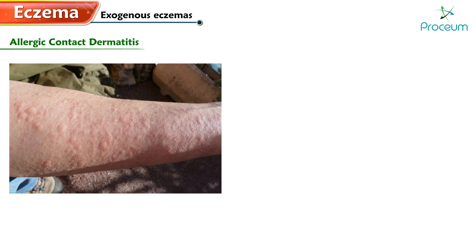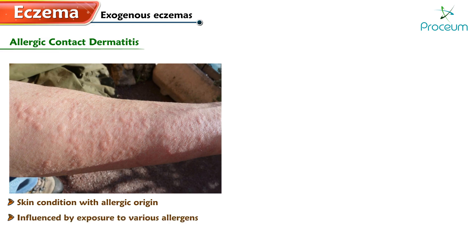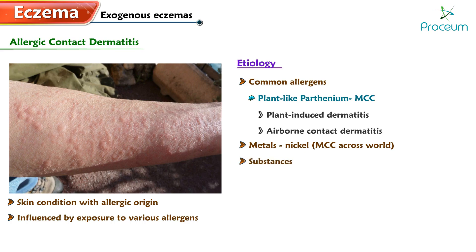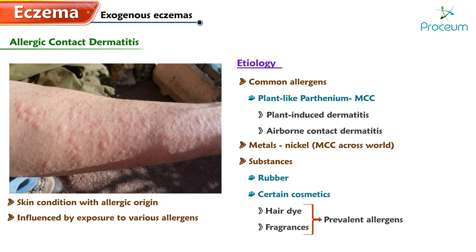Next is allergic contact dermatitis, a skin condition with an allergic origin influenced by exposure to various allergens. Common allergens include plants like parthenium, which is the most common cause of plant-induced dermatitis and airborne contact dermatitis; metals such as nickel, which are the most common cause of contact dermatitis worldwide; and substances like rubber and certain cosmetics such as hair dye and fragrances.